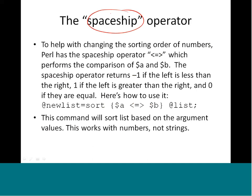We use a specific operator called the spaceship operator, which combines less than, equal to, and greater than - it looks like a spaceship. The spaceship operator returns negative one if the left is less than the right, one if the left is greater than the right, and zero when they are equal. So the new list is: sort { $a <=> $b } list - this performs a real numeric sort. Note this works with numbers and not strings.